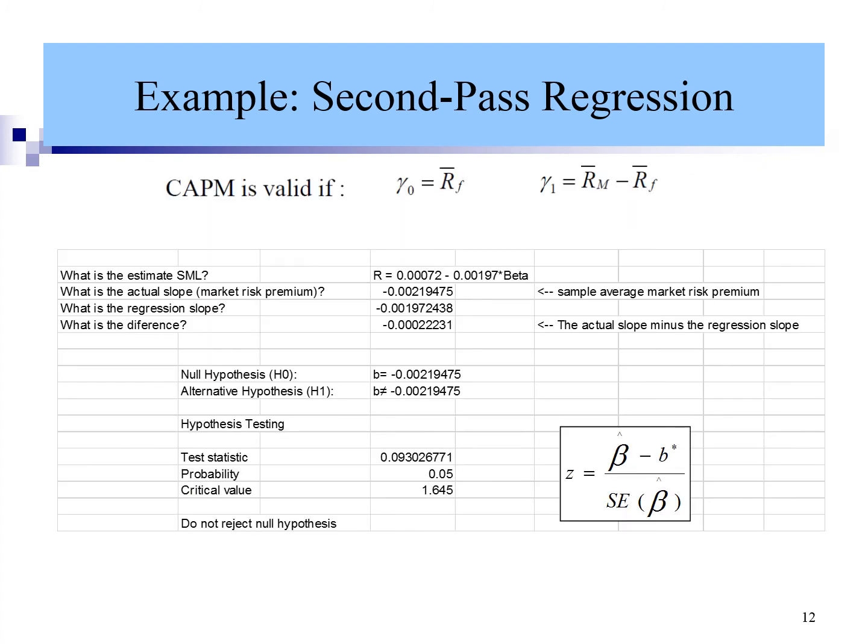A hypothesis test is conducted to verify if gamma 1 equals the market risk premium. The actual market risk premium is -0.00219, and the regressed risk premium is -0.001972. The test statistic is calculated at 0.093. The critical value based on 95% confidence level is 1.645. Therefore, we do not reject the null hypothesis. The conclusion is gamma 1 equals the average market risk premium.